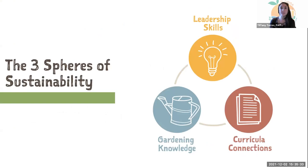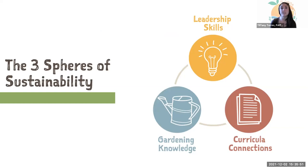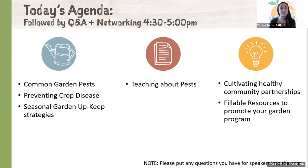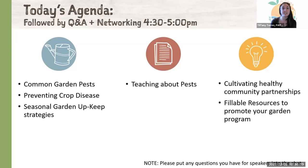This webinar series is designed for Florida school garden leaders of all levels to build gardening confidence, foster collaboration among leaders, and strengthen garden programs for long-term success. We do this by touching on the three spheres most helpful in sustaining school garden programs: gardening knowledge, curriculum connections, and leadership skills. Our ultimate goal is to grow garden leaders. Today's agenda from 3:30 to 4:30 covers common garden pests, preventing crop disease, and seasonal garden upkeep strategies, tips on teaching about pests, curriculum connections, cultivating healthy community partnerships, and resources that promote your garden program.